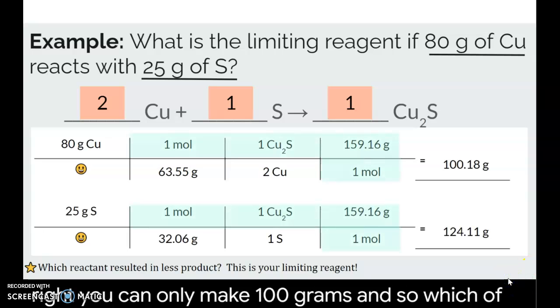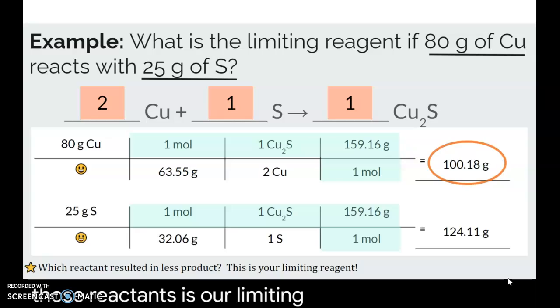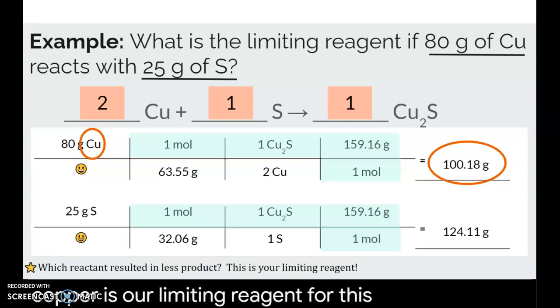And so which of those reactants is our limiting reagent? Yeah. So the copper. So the copper is going to run out first. So copper is our limiting reagent for this problem because it's going to run out first. Even though we're going to have some sulfur left over, we can't actually make 124 grams because there's not enough copper to make 124 grams.